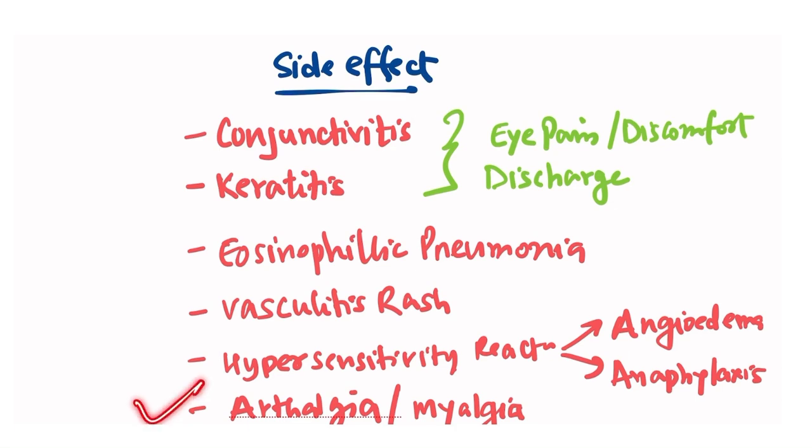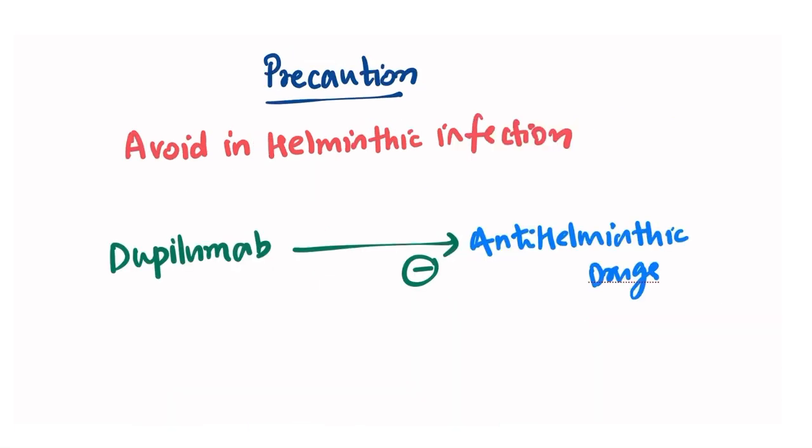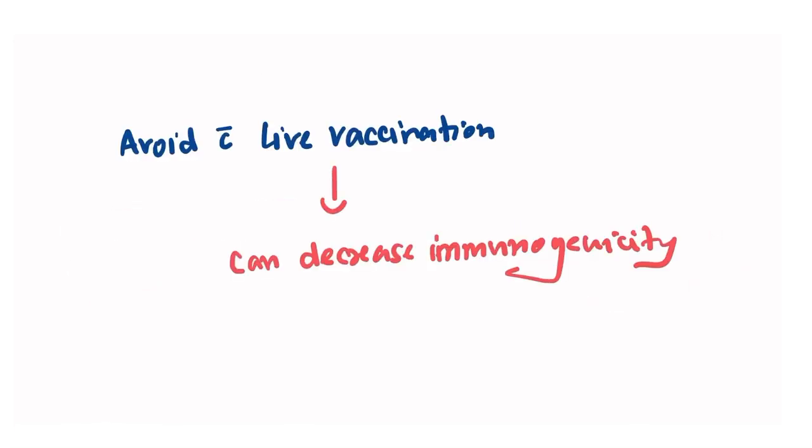Now what precaution you should take while prescribing this drug. It should be avoided in helminthic infection as dupilumab can interact with the anti-helminthic drug and can decrease its effect. This drug should also be avoided if a child is given live vaccination because it can decrease the immunogenicity.